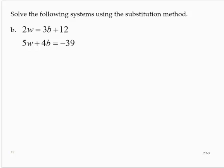In this system, none of the variables are isolated. But if I take that first equation, 2w equals 3b plus 12, I can easily isolate w by dividing through by 2.